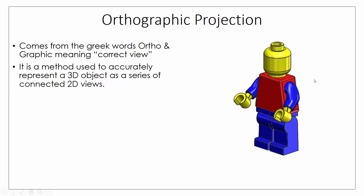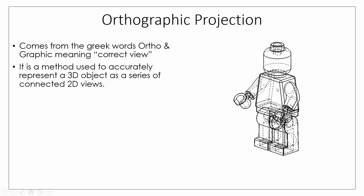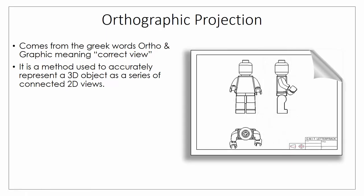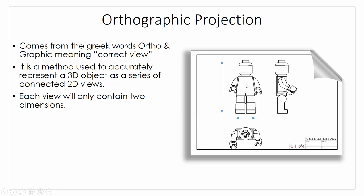If we were to show all the information of the object — the visible part and the hidden part — there's a real overload of information, so it's quite difficult to work from. What's simpler is to break it down into a series of 2D views looking in from different directions. These are our orthographic views, and each view has only two dimensions: looking from the front gives height and width, looking from the side gives height and depth.